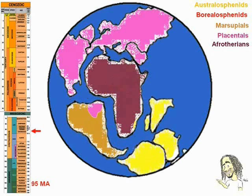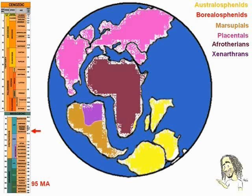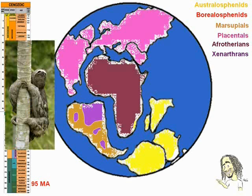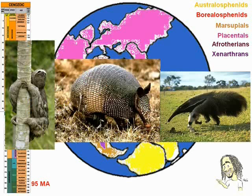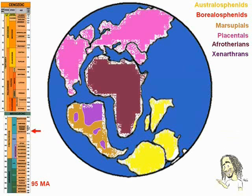95 million years ago, still in the Cretaceous period, South America finally becomes an island. There, the placentals that came from Africa originate the lineage of the Xenarthra, marked here in purple — the ancestors of the only family of living mammals originally from South America, that comprises today the sloths, the armadillos, and anteaters. But we can't forget that in that time, all of them still resembled small shrews.